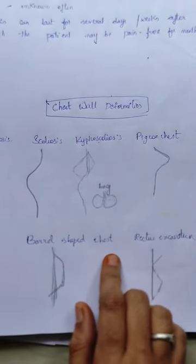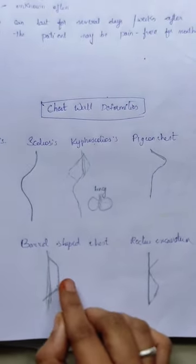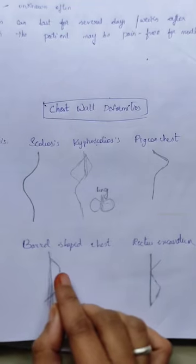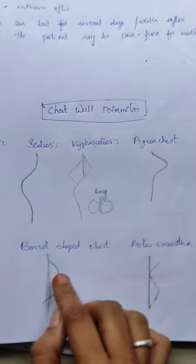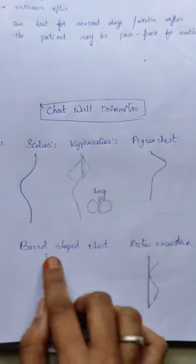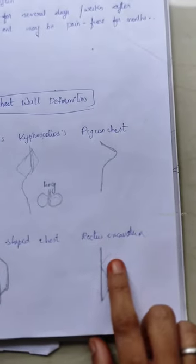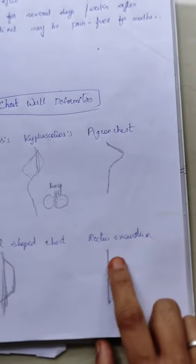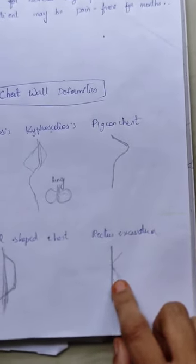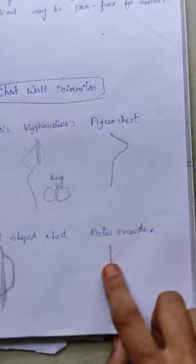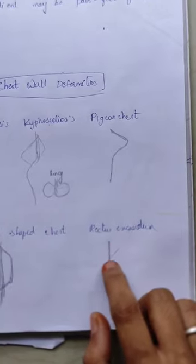Barrel shaped chest is caused by the overgrowth of the cartilage between the ribs and the sternum, giving a front barrel-shaped appearance. Next, funnel chest — this is where the breast bone sinks inside the chest, giving a caved-like appearance.